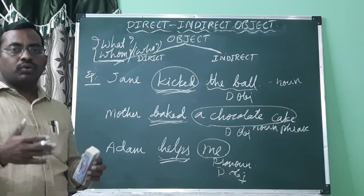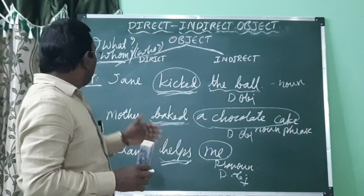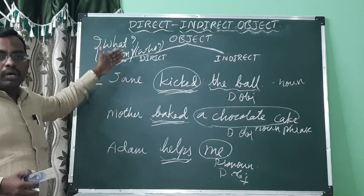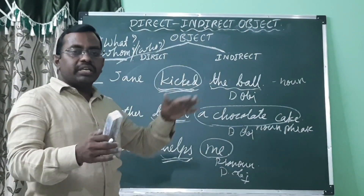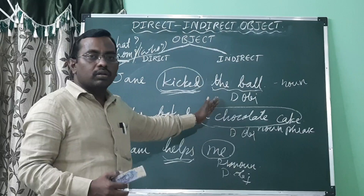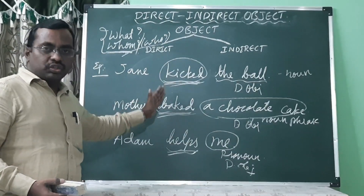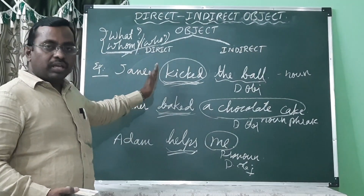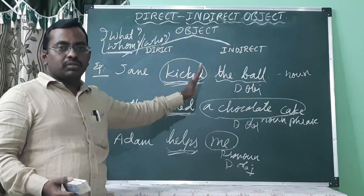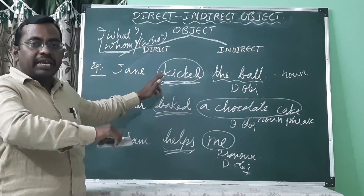We also understood how to identify direct objects in a sentence — by questioning the verb with 'what,' 'who,' or 'whom.' For example, what is kicked? The ball. So the ball is the direct object. The effect of the action falls on the object — on a person or a thing. Whatever receives the action is the direct object.